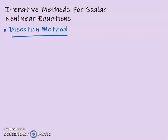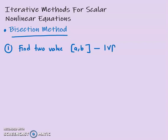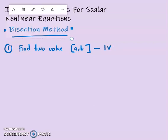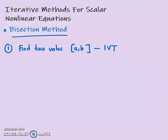So how do we use the bisection method? First, we need to find two values, A and B — these define the interval. This interval must satisfy the Intermediate Value Theorem, which says that for a given function F, at the two values A and B, F(A) multiplied by F(B) must be less than 0. That's the first condition — we want to locate the root.